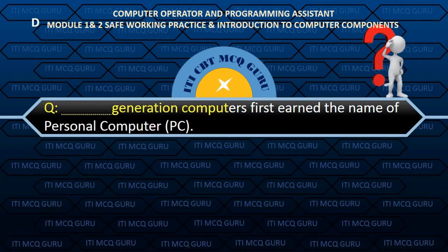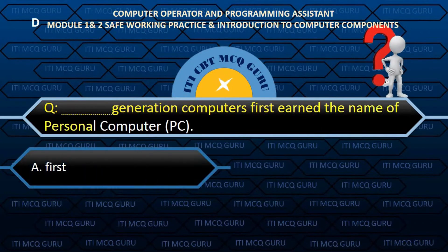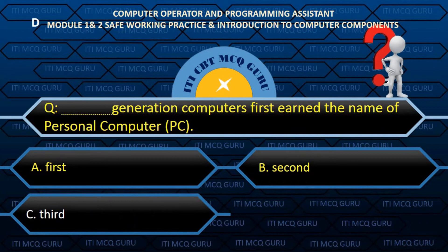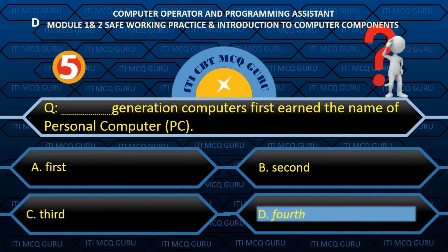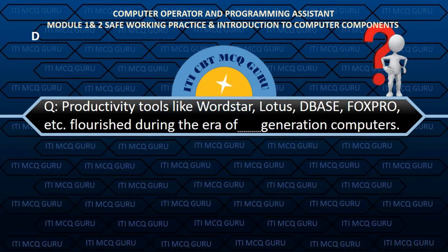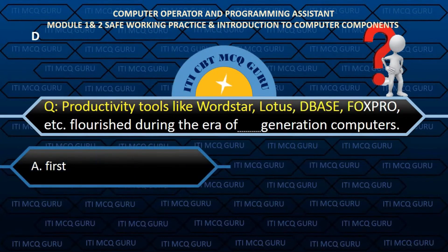Which computers first earned the name of personal computer (PC)? Answer: D. Fourth generation. Productivity tools like WordStar, Lotus, D-Base, FoxPro, etc. were popularized during the fourth generation era.